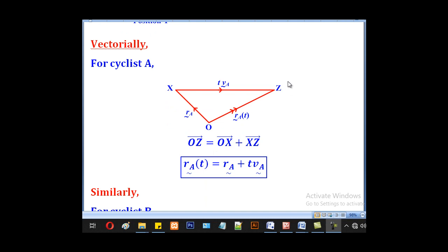Therefore, the position vector at Z will be given by OX plus XZ. So OZ is denoted by RA(t), meaning position vector at time T. Then OX is denoted by RA, meaning initial position vector. Then T times VA is the displacement moved from X to Z. So that will be the equation of the path taken by cyclist A.